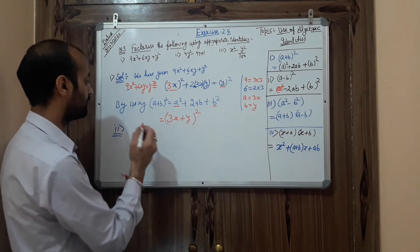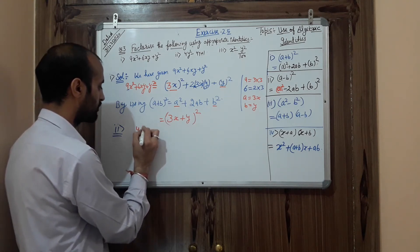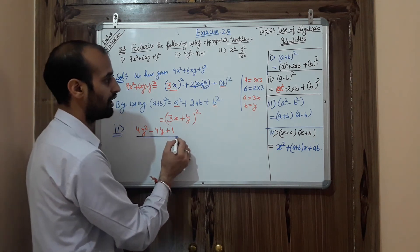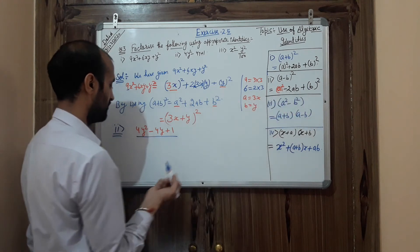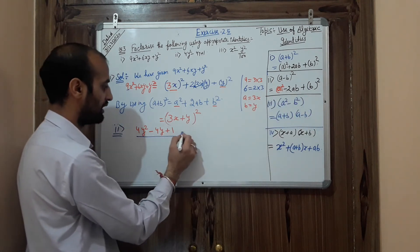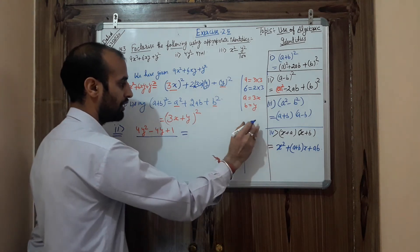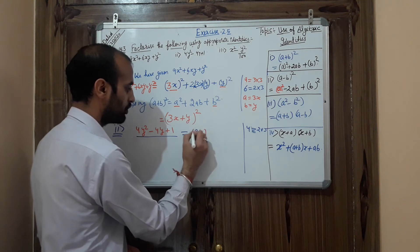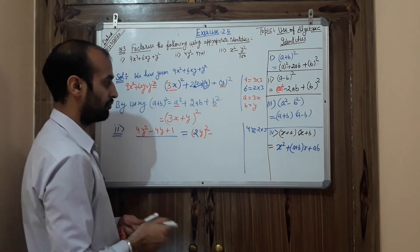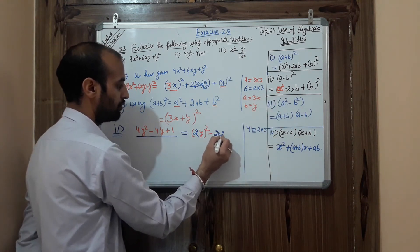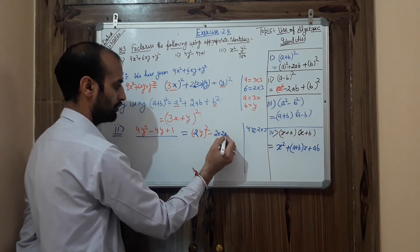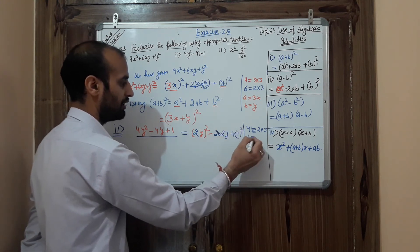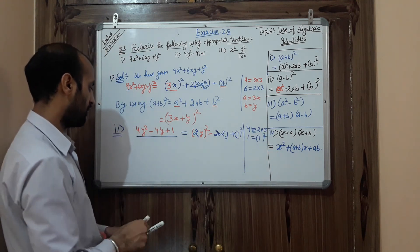Now have a look at the second part: 4y² − 4y + 1. If you see this question, it has a square term, then a minus term, then a plus term. So 4 can be written as 2 × 2, meaning 2 is squared, and y is already given. Then − 4y, and I need 2ab here: 2 × 2 × y. The last term 1 can be written as 1².